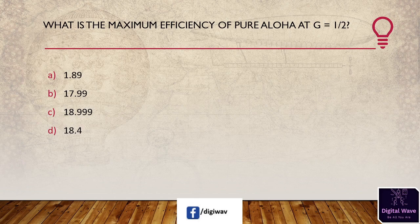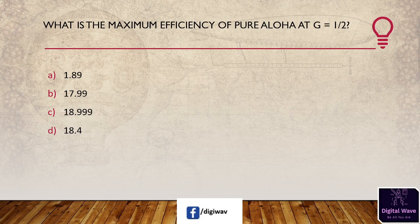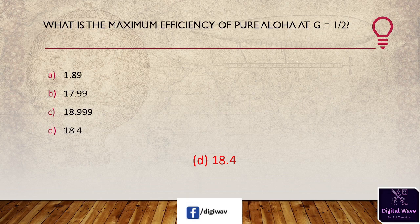Next question: what is the maximum efficiency of pure ALOHA at G = 1/2? Options are: 1.89%, 17.99%, 9.18%, and 18.4%. The answer is approximately 18.0%. The maximum efficiency of pure ALOHA uses the formula G × e^(−2G); substituting G = 1/2 gives the answer.